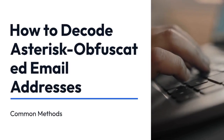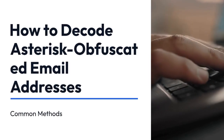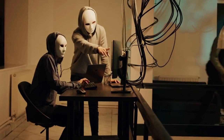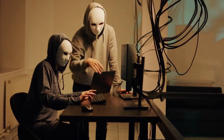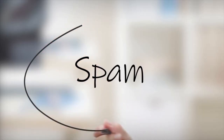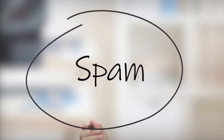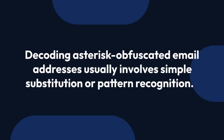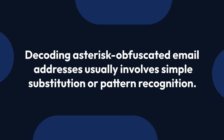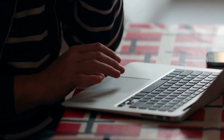We're going to explain how to decode asterisk-obfuscated email addresses. These addresses, often seen on websites to prevent email harvesting by bots, replace parts of the address with asterisks. Decoding them usually involves simple substitution or pattern recognition. Let's look at common methods.